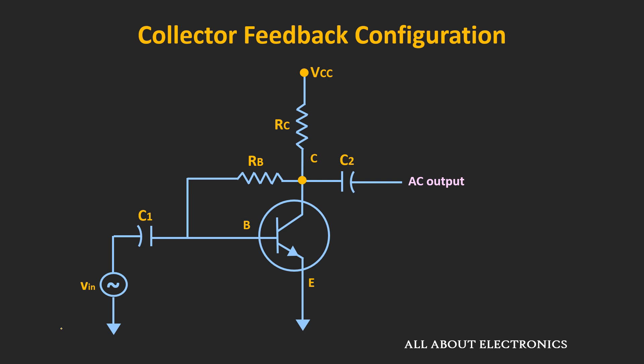For the AC analysis perspective, this circuit is still a common emitter amplifier. Because here, the input is applied between the base and the emitter terminal, while the output is measured between the collector and the emitter terminal. That means the emitter terminal is common between the input and the output side. So let's do the small signal analysis and find the different amplifier parameters like the voltage gain, the input and the output impedance.